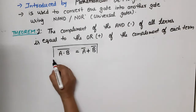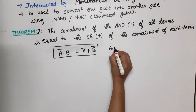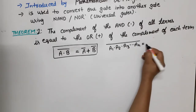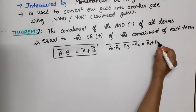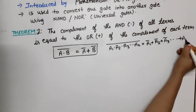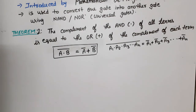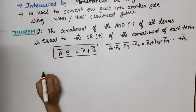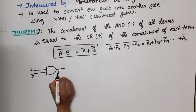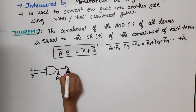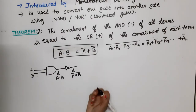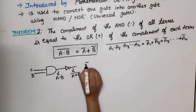If we have n variables — A1 dot A2 dot A3 ... dot An — then the complement of their AND equals the OR of the complement of each individual variable. For the circuit diagram: first we AND A and B to get A dot B, then apply a NOT gate to get (A dot B) bar. This circuit is equivalent to a NAND gate. At the output of a NAND gate with inputs A and B, we get A dot B bar.